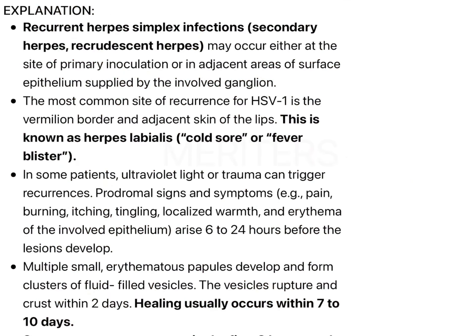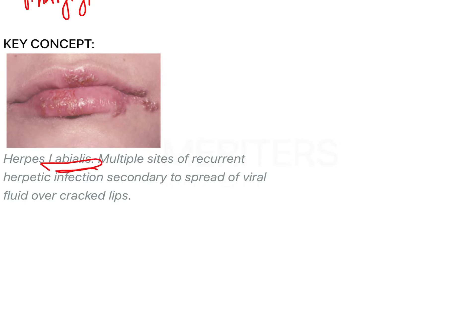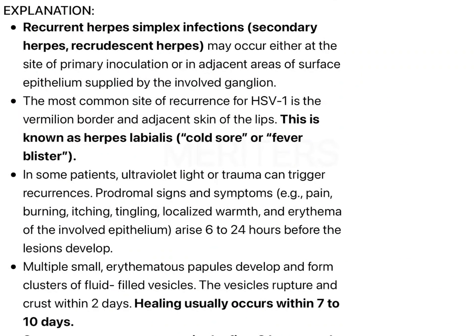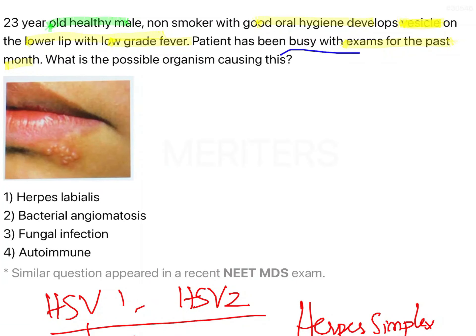Recurrent herpes is called secondary herpes or recrudescent herpes, also known as cold sore or fever blister. The site — labialis — is very common. There are multiple sites of recurrence, secondary to spread of viral reactivation. This is why the question mentions the patient has been busy with exams for the past one month — stress is a trigger, so if aphthous ulcer is also an option, that could be considered.